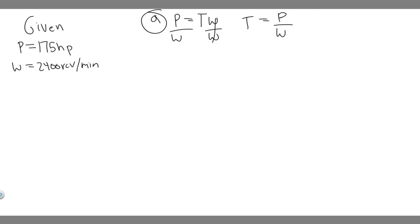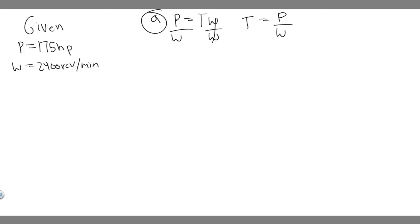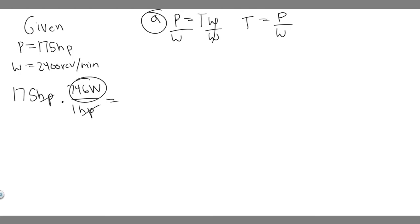So we can go ahead and plug it in, but before we do that we have to make sure we do some unit conversions. The power has to be measured in watts, and angular velocity has to be measured in radians per second. So 175 horsepower — one horsepower is equal to 746 watts, so multiply by 746. The horsepower cancels and you get watts: 175 times 746 gives you 130,550 watts.